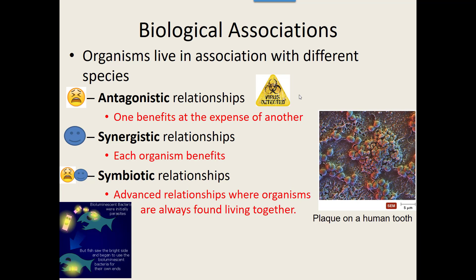There are synergistic relationships where two, three, or more organisms live together and they all benefit. There are also symbiotic relationships, meaning organisms that always live together — they've developed over time an advanced relationship where they can't survive without each other. That doesn't mean it's always beneficial for all of them; sometimes one benefits, some are not harmed, and sometimes they get harmed but don't die. It's a complex relationship where they are always found together.